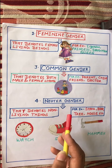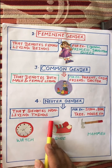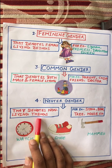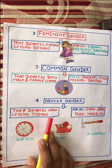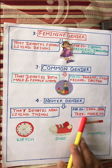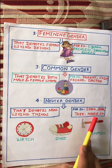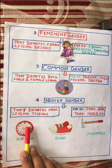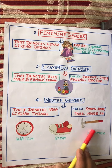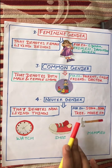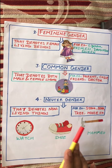The last type is neuter gender. The noun that denotes non-living things is called neuter gender. Jo noun humein non-living things ke baare mein batata hai — non-living things jin mein jaan nahi hoti, jo move nahi ho sakte, jaise table, chair. Examples are: stone, book, tree, house. We also learn by pictures: this is a watch — it is a non-living thing; this is a shoe; this is a hammer. All these are non-living things and belong to neuter gender.